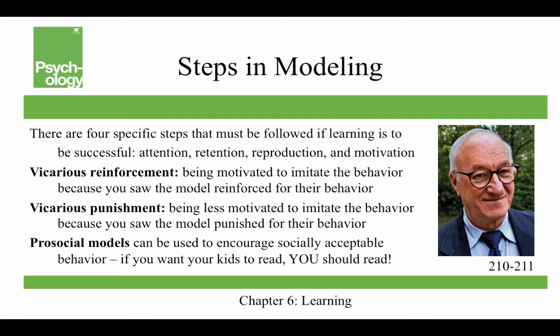We can also have pro-social models. If you see someone yelled at in class for texting, then you might not text in class either — that's vicarious punishment. Pro-social models can be used to encourage socially acceptable behavior. So if you want your children to read, you should read and they should see you reading. This works for other behaviors too, like honesty, kindness, and courtesy — you should model the behaviors that you want to see in your own children. Albert Bandura would agree.